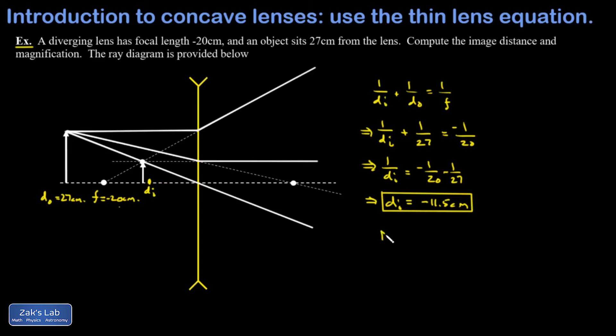Finally, we get the magnification. Remember, the minus sign keeps track of the orientation for us. So I plug in my negative image distance there, and my magnification becomes positive. And I get a positive magnification of 0.43. So the image is smaller than the object by a little more than a factor of two.